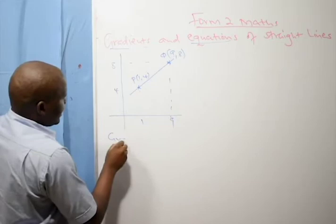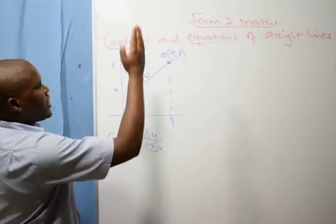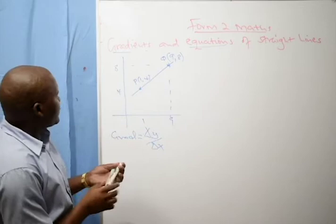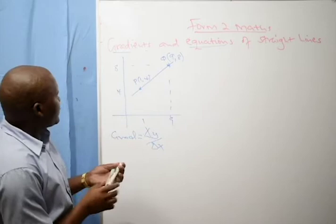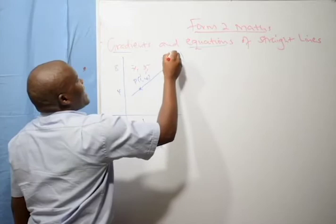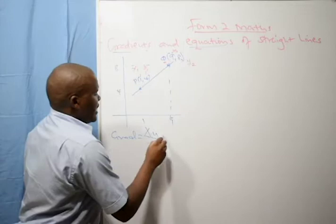For this line, the gradient is found as change in Y over change in X. In the previous example, I talked about vertical distance over horizontal distance — that is what we refer to as change in Y over change in X. If we agree this is our first point, X1 is 1 and Y1 is 4. Then Q is our second point, so X2 is 9 and Y2 is 8.